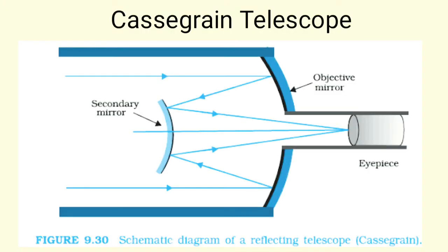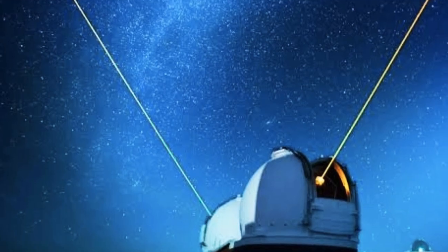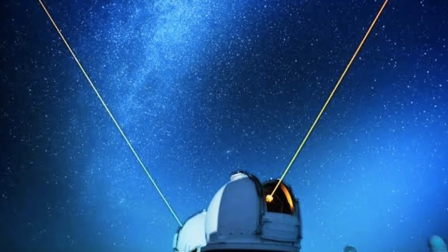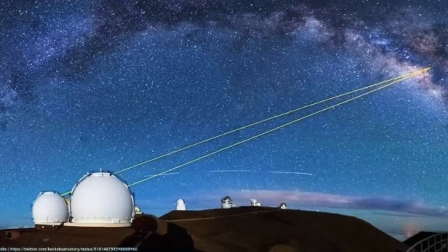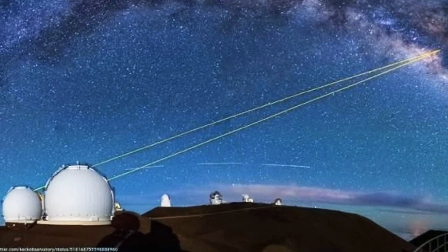One important type of reflecting telescope is the Cassegrain telescope, named after its inventor. It uses a convex mirror as a secondary mirror to focus incident light, which then passes through a hole in the center of the primary objective mirror, as seen in the diagram. The advantage of the Cassegrain telescope is achieving a large focal length in a short tube. The largest reflecting telescopes in the world are the pair of Keck telescopes in Hawaii, USA, with reflectors of 10 meters in diameter.